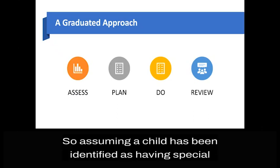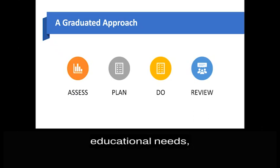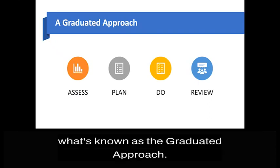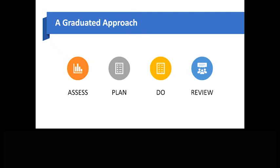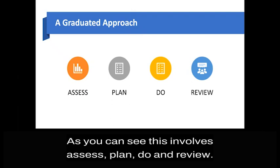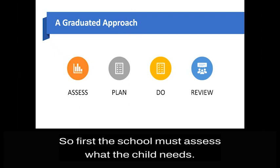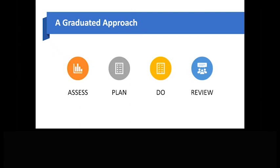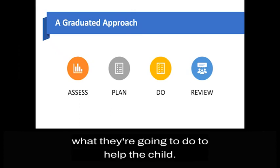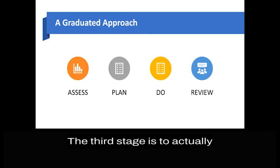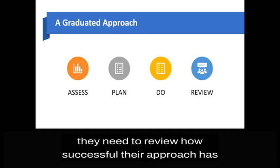Assuming a child has been identified as having special educational needs, what should the school do? They need to follow what's known as the graduated approach. This involves assess, plan, do and review. First, the school must assess what the child needs. Then they need to plan what they're going to do to help the child. The third stage is to actually do what they have planned. And then lastly, they need to review how successful their approach has been.